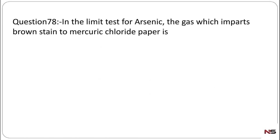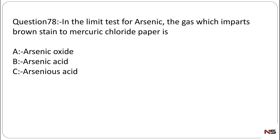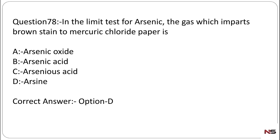Question number 78: In the limit test of arsenic, the gas which imparts a brown stain to mercuric chloride paper is arsine. Arsine is the correct answer, Option D.